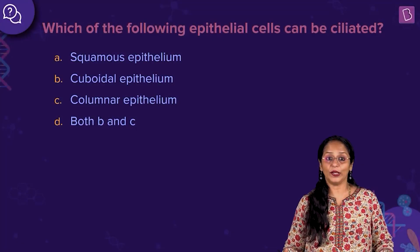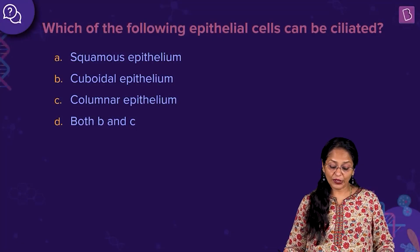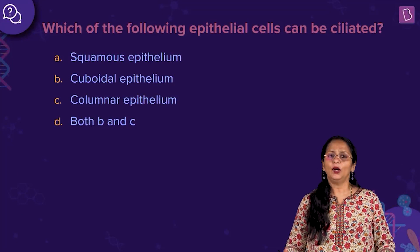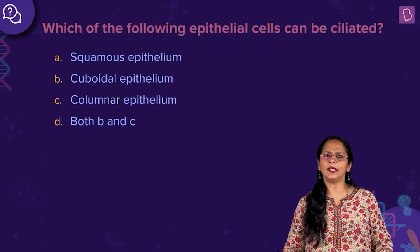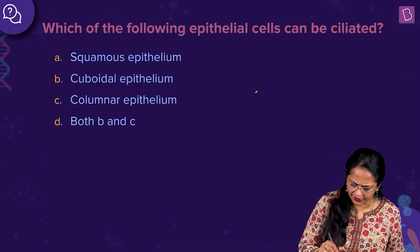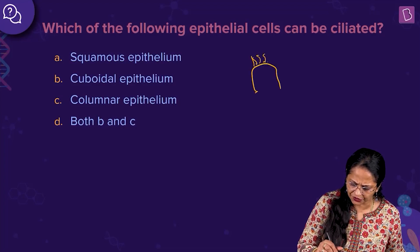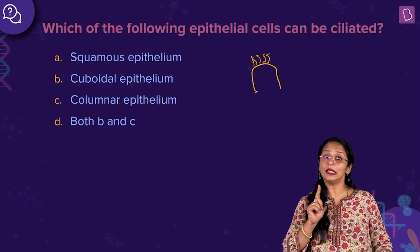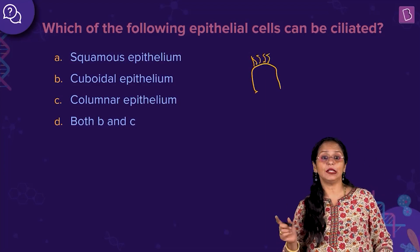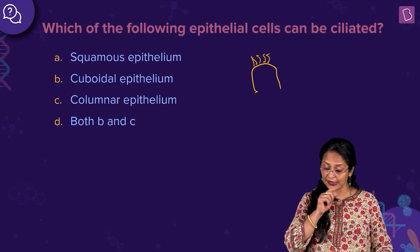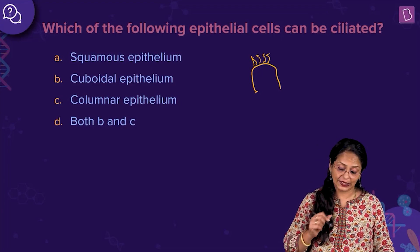Now let us look at this question. Which of the following epithelial cells can be ciliated? What do you mean by cilia? Small hair-like structures. If you have a cell, you have small hair-like structures — this is called cilia. Singular is cilium, plural is cilia. So which among the following epithelial cells can be ciliated?